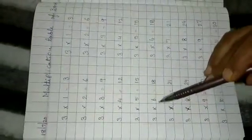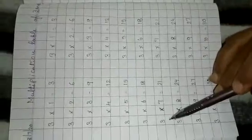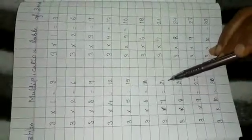3 6s are 18. 3 7s are 21. 3 8s are 24. 3 9s are 27. 3 10s are 30.